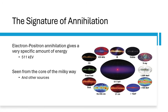In the centre, the 511 kilo-electron-volt gamma ray emissions — much of which is coming from the very centre of the galaxy — are associated with the material in and around the very hot region where the supermassive black hole in the centre of our Milky Way resides. But there are other hot spots throughout the galaxy as well, and indeed across the whole of the universe.